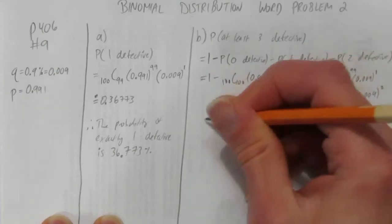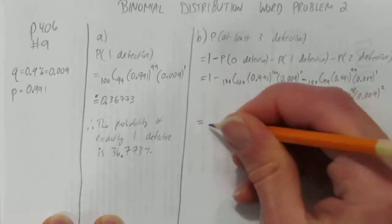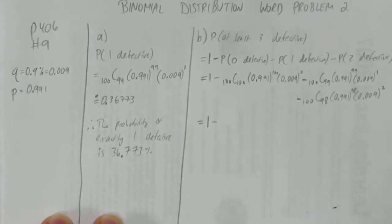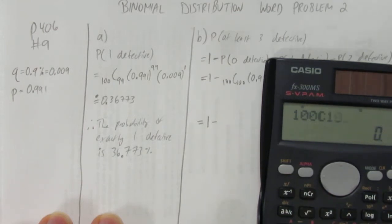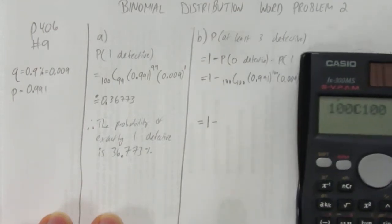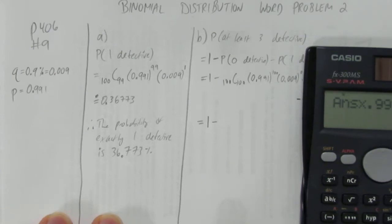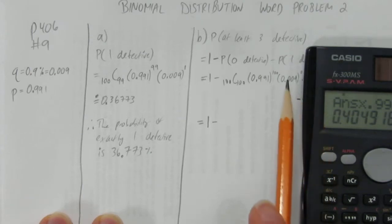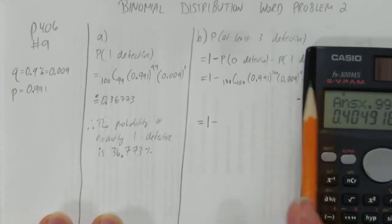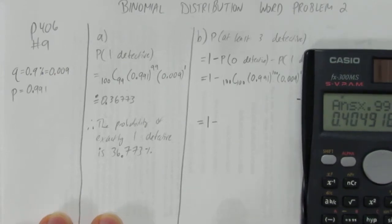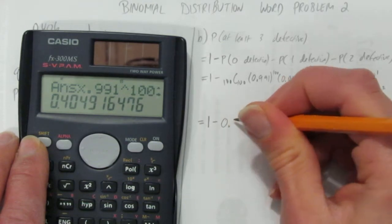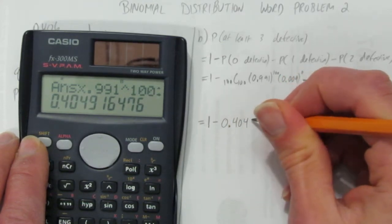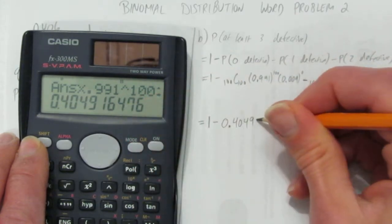And now we'll calculate these probabilities. Let's do each one separately and leave this 1 out here. We don't want to forget that. 100% minus. So, what's 100 choose 100? It's just 1. But you can check on your calculator if you don't believe me. 100 choose 100 is 1 times 0.991 to the power of 100, and you can times it by 0.009 to the power of 0, but that's just 1. So let's use that number, and we'll round to 5 decimals. I get 0.40492.